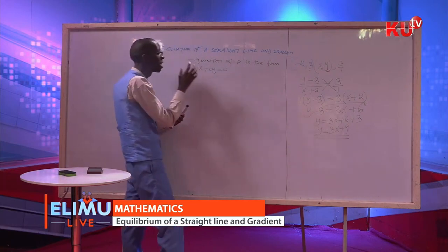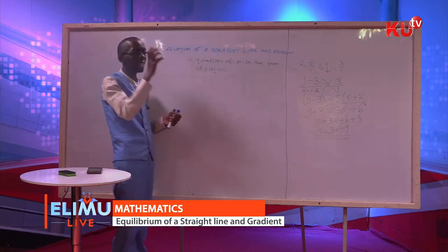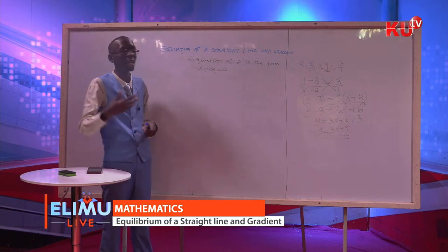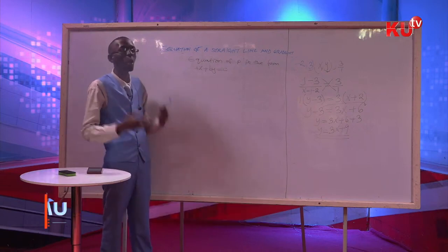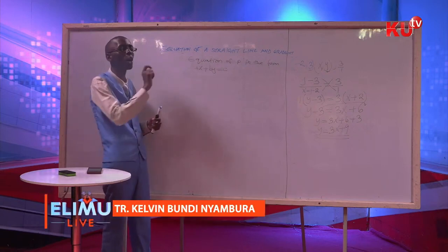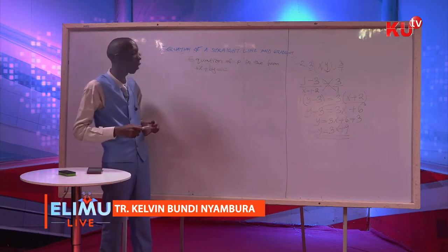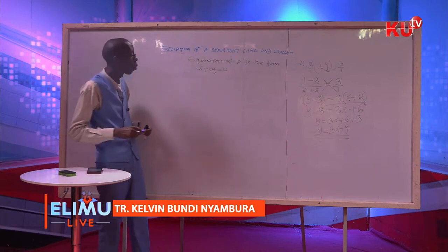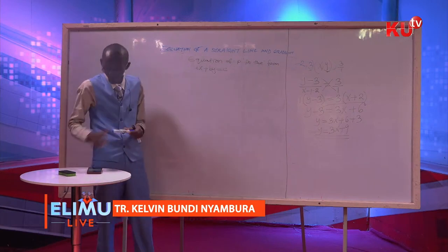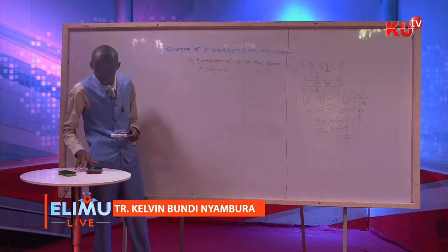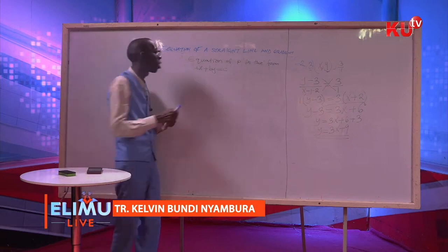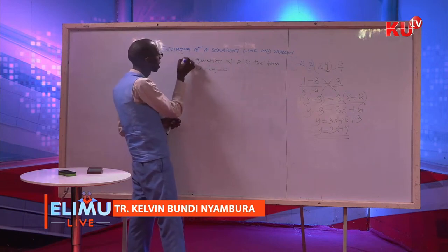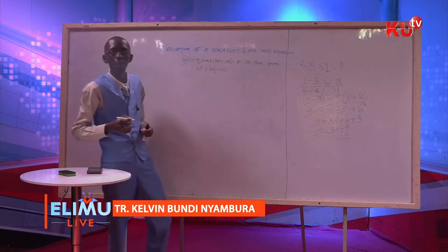We call this the double intercept form. Sometimes in the exam you'll be told to write your equation in the double intercept form. This is the form AX plus BY is equal to C, where A, B, and C are constants.